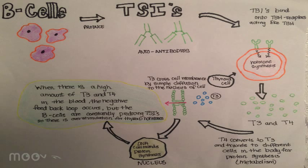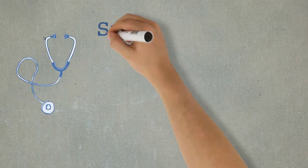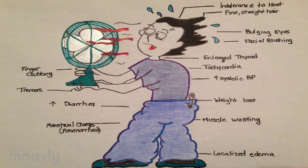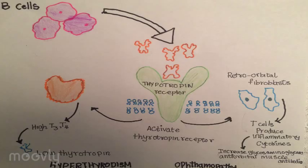Graves' disease is the most common cause of hyperthyroidism. Symptoms of the disease include insomnia, increased heart rate, weight loss, muscle weakness, fatigue, mood swings, light menstrual flow, hot flashes, infertility, frequent bowel movements, goiter (which is the enlargement of the thyroid), protruding eyes, and ophthalmopathy. Ophthalmopathy is thought to result from cytokines and can cause severe eye problems such as diplopia and visual loss.